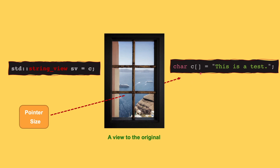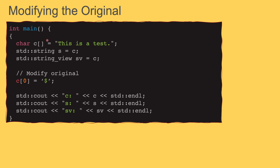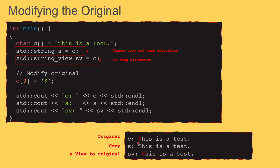And because it's just a view, if I change the original, the view should also change. Let's look at this example. First, I define my original — a C-style string. Then I create a copy of type string, and then I create an object of type string view and pass C to its constructor. Next, I modify the original. When I print C, S, and SV, I expect C to be changed, I expect SV the string view to also change, however S which is just a copy should not change. And this is indeed the output: the original changed, S is a copy so it doesn't change, but SV is just a view, so because I changed the original, the view also changes.